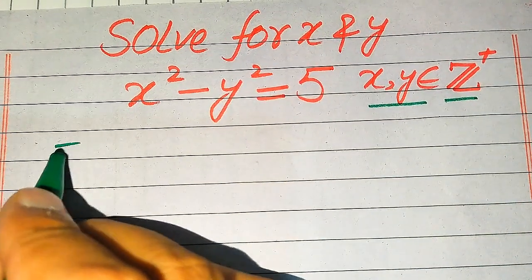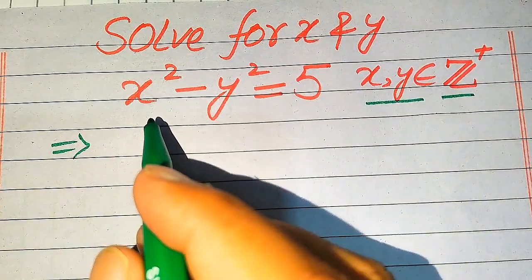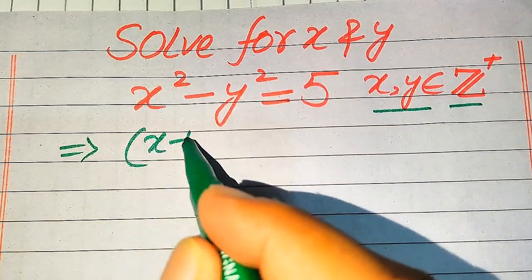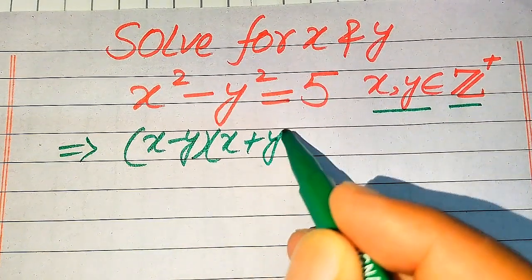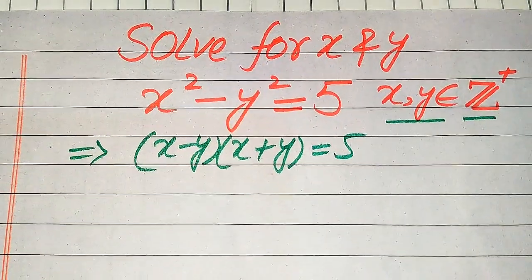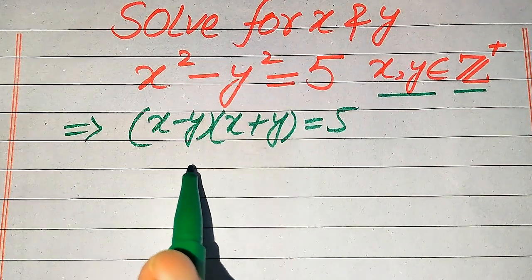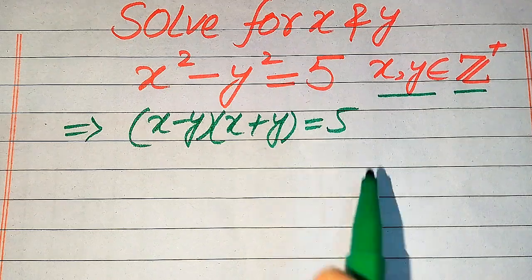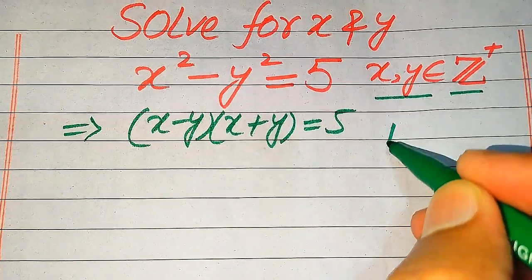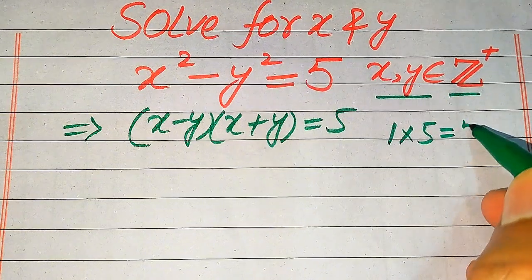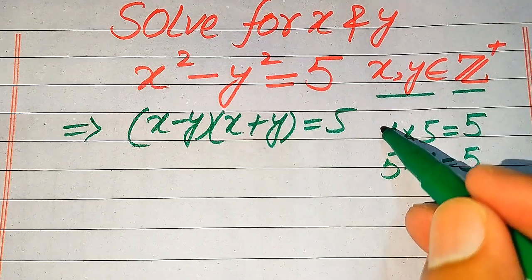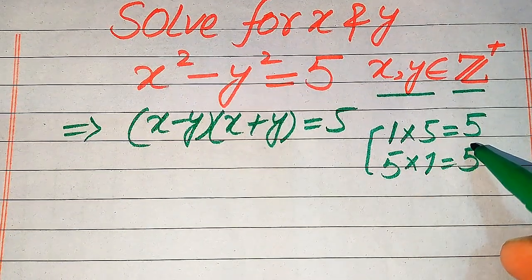Here on the left hand side you see the very famous algebraic formula: x squared minus y squared equals x minus y times x plus y, and that equals 5. On the left hand side we have two factors multiplied by each other, but on the right hand side we have only one factor. We need positive integers whose product is 5. The possibilities are 1 times 5 equals 5, and 5 times 1 equals 5. We choose these positive integers whose product is 5.